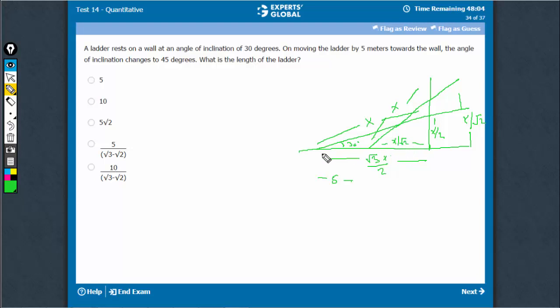So we can just equate these two. Look at the base: x upon root 2 plus 5 is equal to root 3 x upon 2.